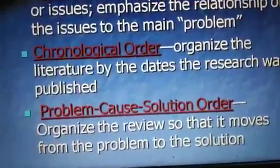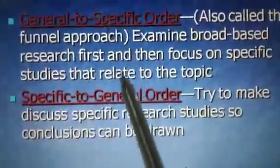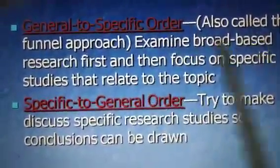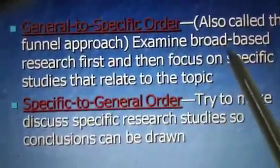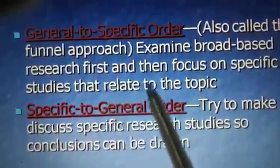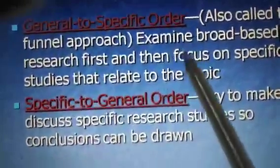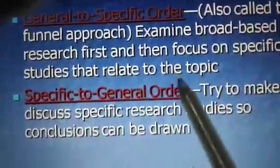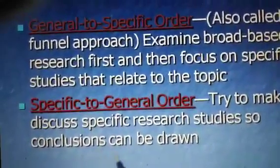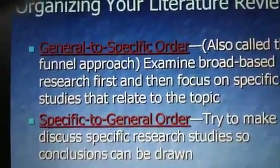There is also problem-cause-solution order, which organizes the review so that it moves from the problem to the solution. Two more types are general-to-specific order — called the funnel approach — which examines broad-based research first and then focuses on specific studies related to the topic; and specific-to-general order, which discusses specific research studies so that conclusions can be drawn. These are all the various types of reviewing literature.